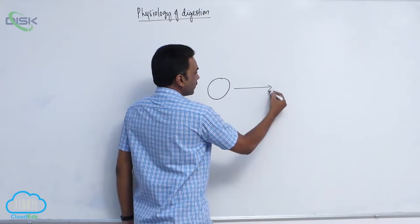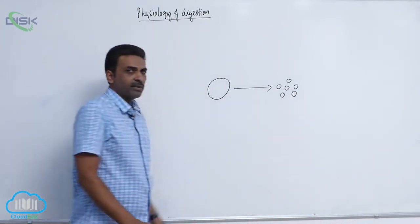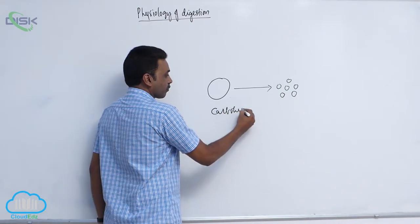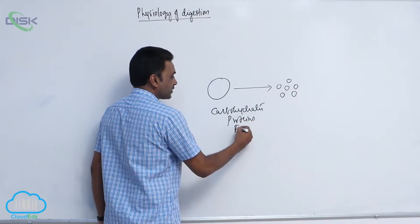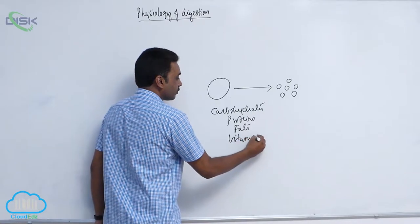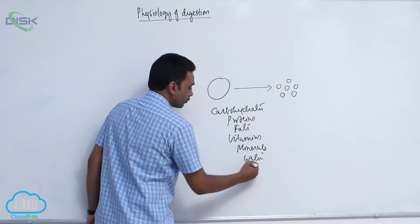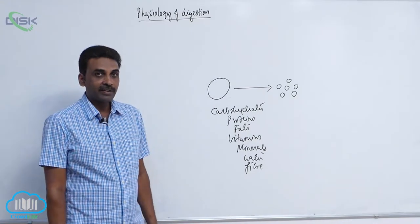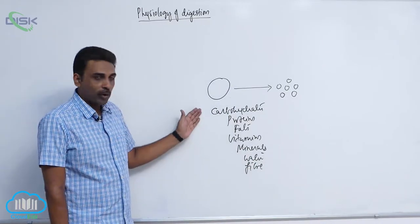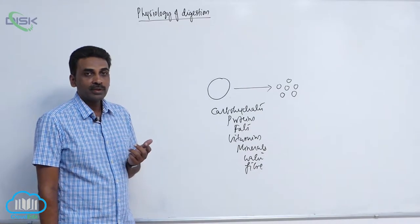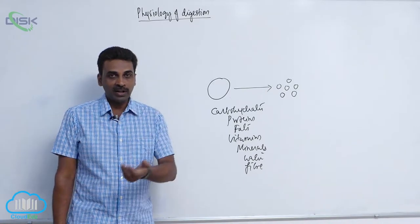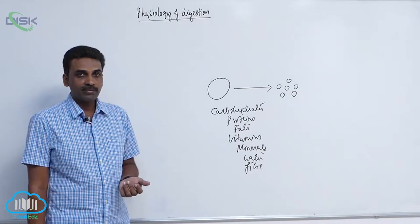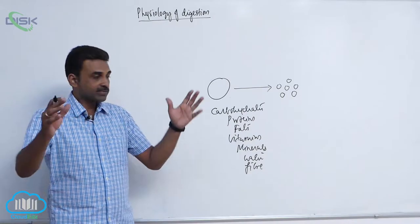The food we take — the balanced food — includes carbohydrates, proteins, fats, vitamins, minerals, water, and fiber. Carbohydrates include starch in all forms: rice, roti, cereal grains. All these are carbohydrates in polysaccharide form — complex polysaccharides.